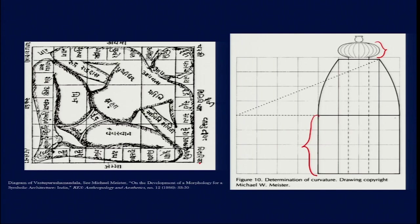As we can see, the ground plan is square and the vertical elevation is also square. On the top of that is the superstructure, using equal dimensions, which is called the shikara.